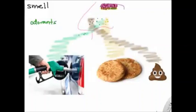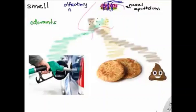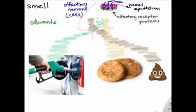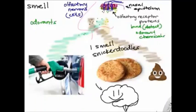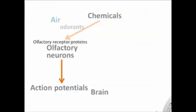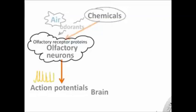With smell, chemicals are released from things like cookies or gasoline, float through the air, travel to your nasal cavity, and bind to special olfactory neurons there. You have epithelium lining your nasal cavity; embedded in it are olfactory neurons that make olfactory receptor proteins which bind specific chemicals — odorants. When these chemicals bind, they trigger action potentials routed back to your brain, which interprets them as specific smells.